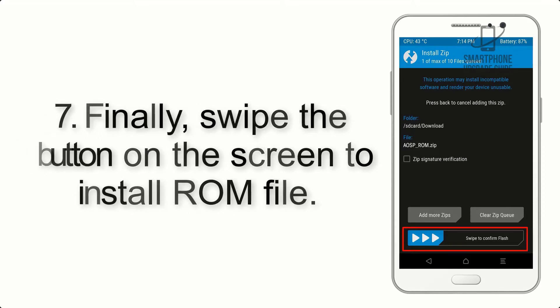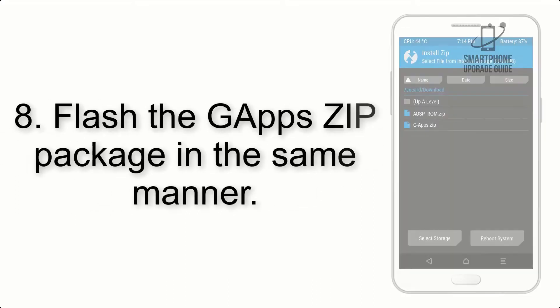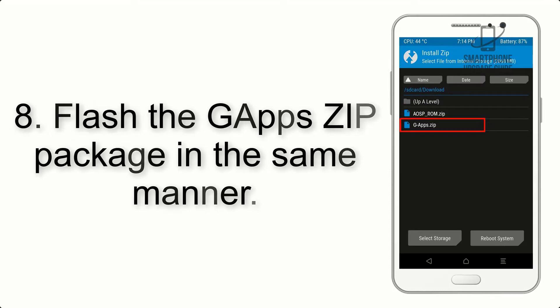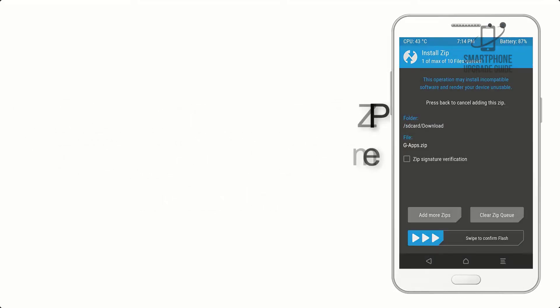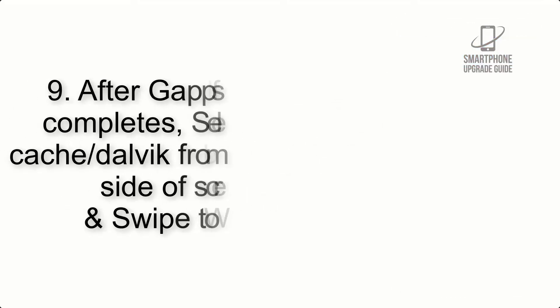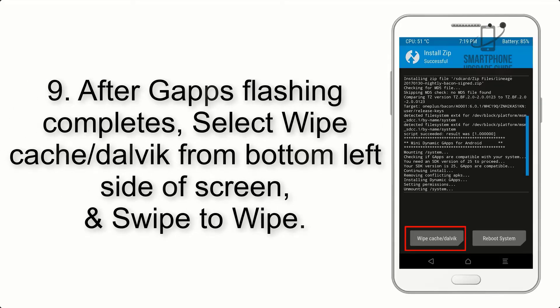Step 7: Swipe the button on the screen to install the ROM file. Step 8: Flash the GApps zip package in the same manner.